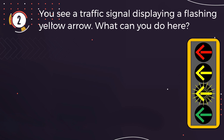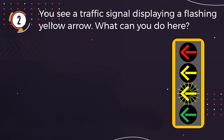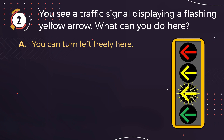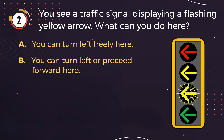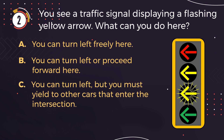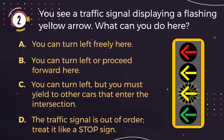Number 2. You see a traffic signal displaying a flashing yellow arrow. What can you do here? A: You can turn left freely here. B: You can turn left or proceed forward here. C: You can turn left, but you must yield to other cars that enter the intersection. D: The traffic signal is out of order — treat it like a stop sign.